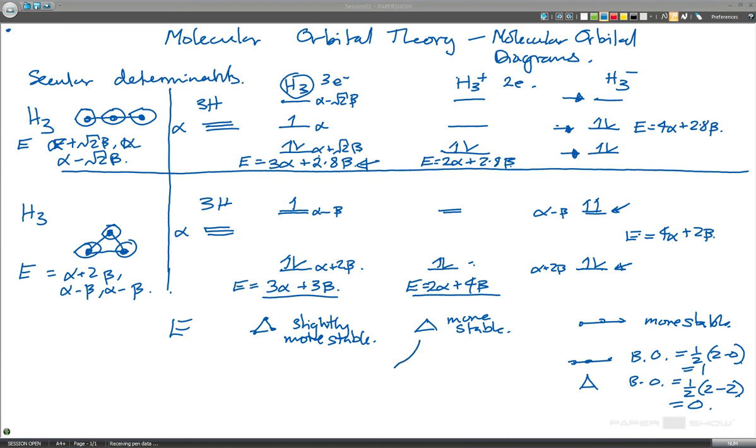Now, famously, H3 plus is triangular in reality. And although the Hückel theory is very simple, we've made loads of approximations using it, it's actually quite helpful here. Let's just look at the bond order. So in both cases we have two electrons in a bonding orbital, we have no other electrons. So for both of them, the bond order is a half of 2 minus 0, which is equal to 1.